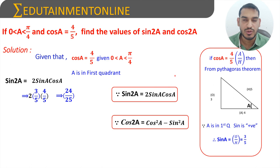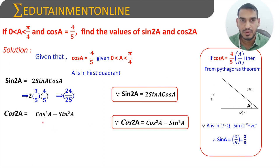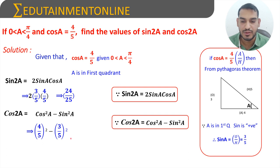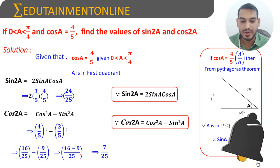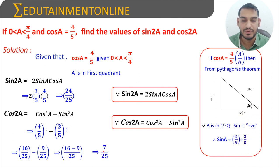To find cos 2A, we use the formula cos 2A = cos²A − sin²A. cos A is 4/5, so cos²A is (4/5)² = 16/25. sin A is 3/5, so sin²A is (3/5)² = 9/25. Therefore, cos 2A = 16/25 − 9/25 = 7/25. In summary, sin 2A equals 24/25 and cos 2A equals 7/25.